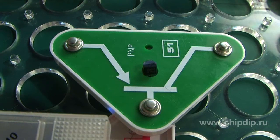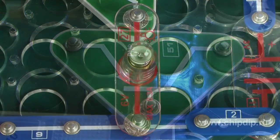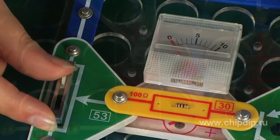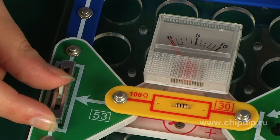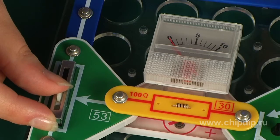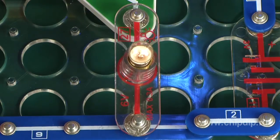The collector and base currents are close to zero, and the lamp is off. Keeping track of the milliampere meter pointer, we smoothly move the rheostat slider until the lamp lights up.